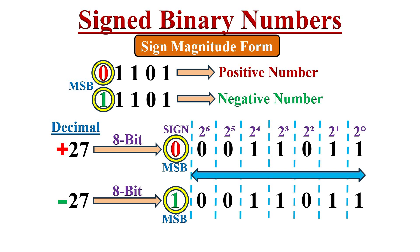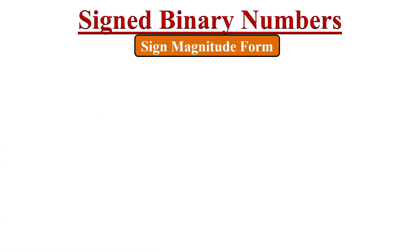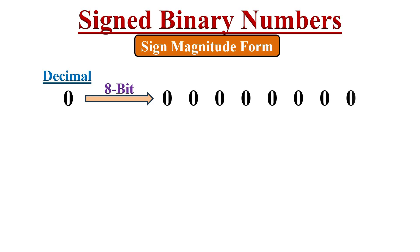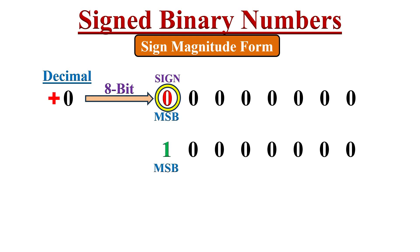If you want to represent 0 in 8-bit sign magnitude form, we write it as eight zeros, where the MSB or sign bit is 0, giving positive 0. If we put 1 in the MSB instead of 0, it becomes minus 0 in 8-bit form. This is a special case — there are two different representations of 0 in sign magnitude form.